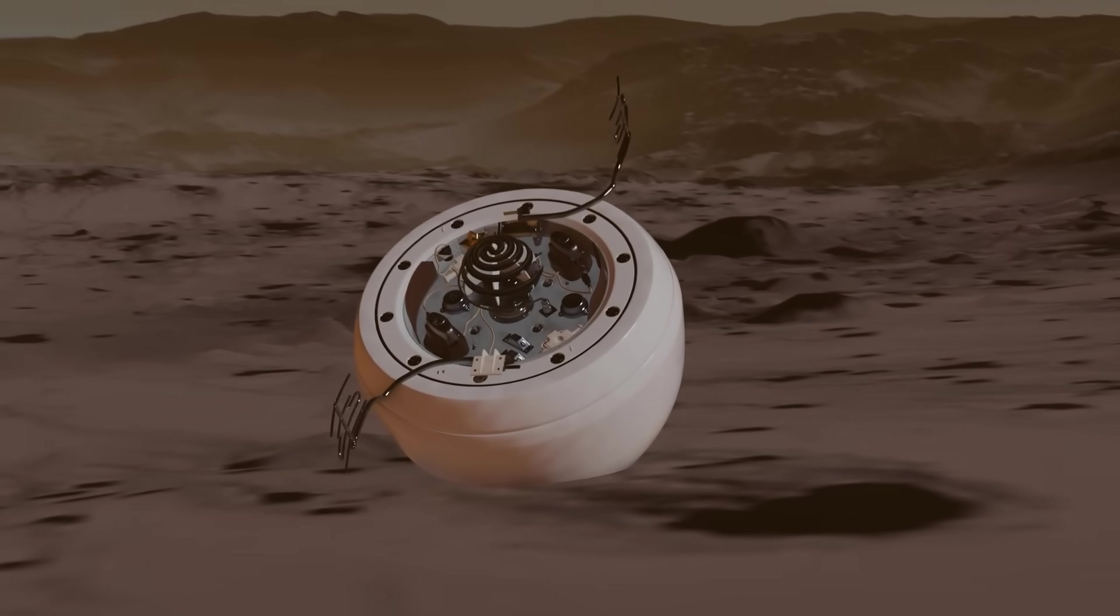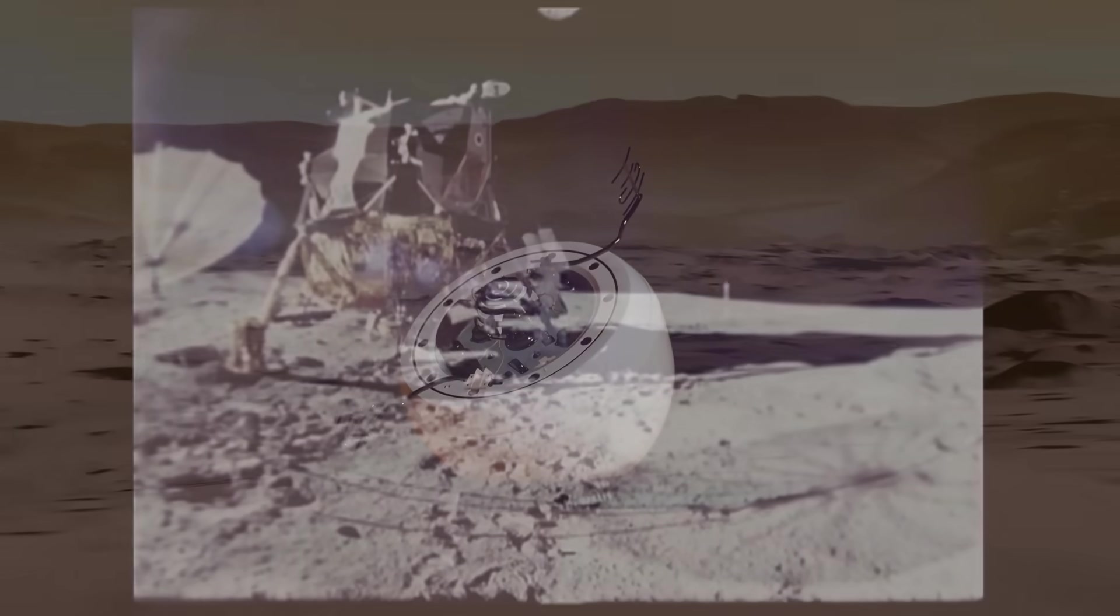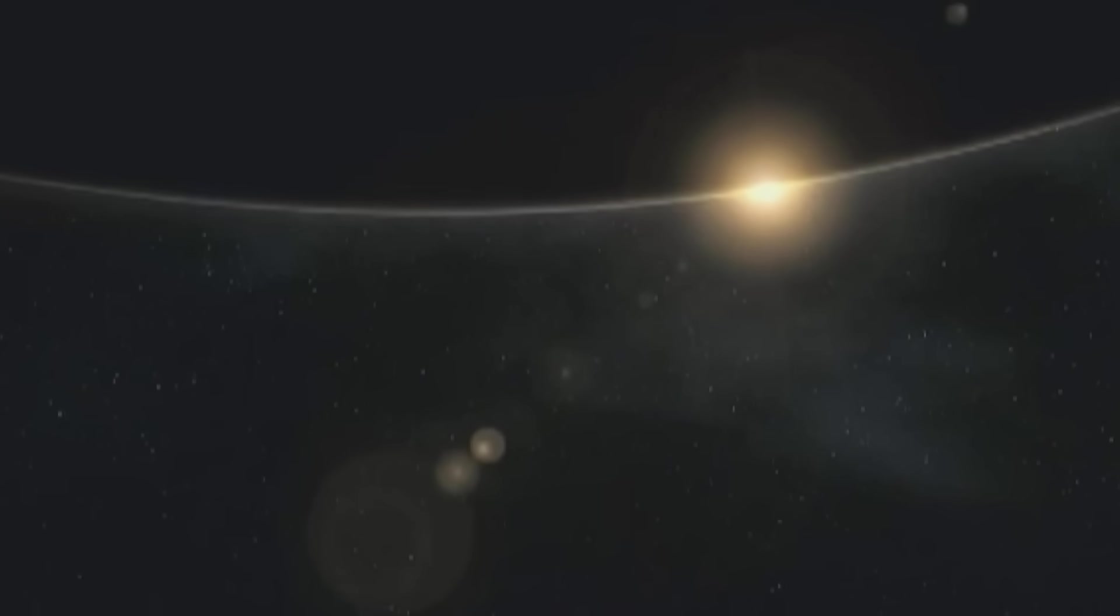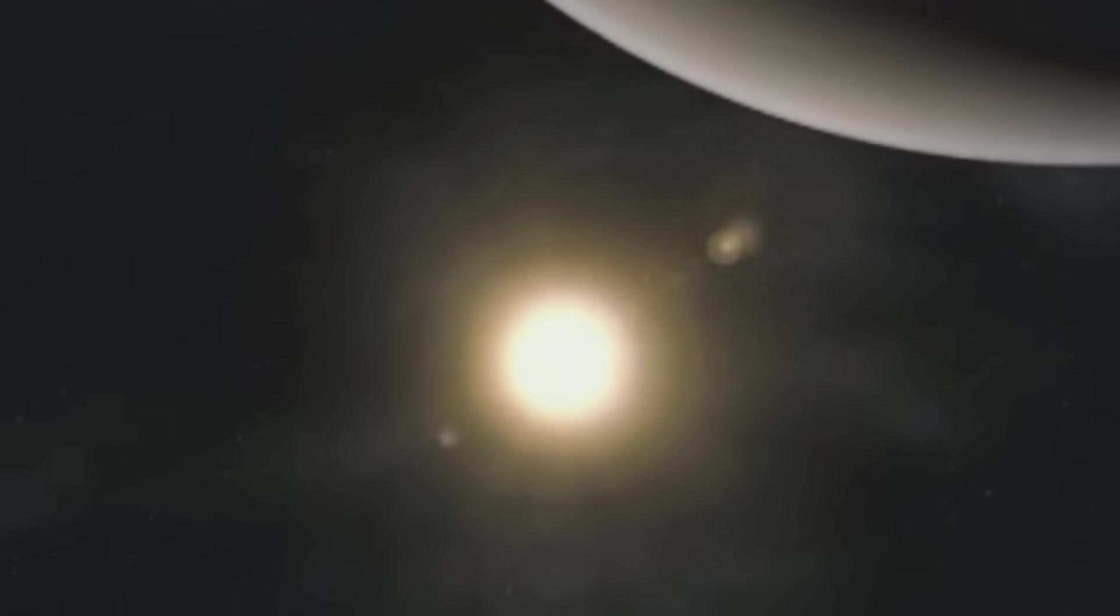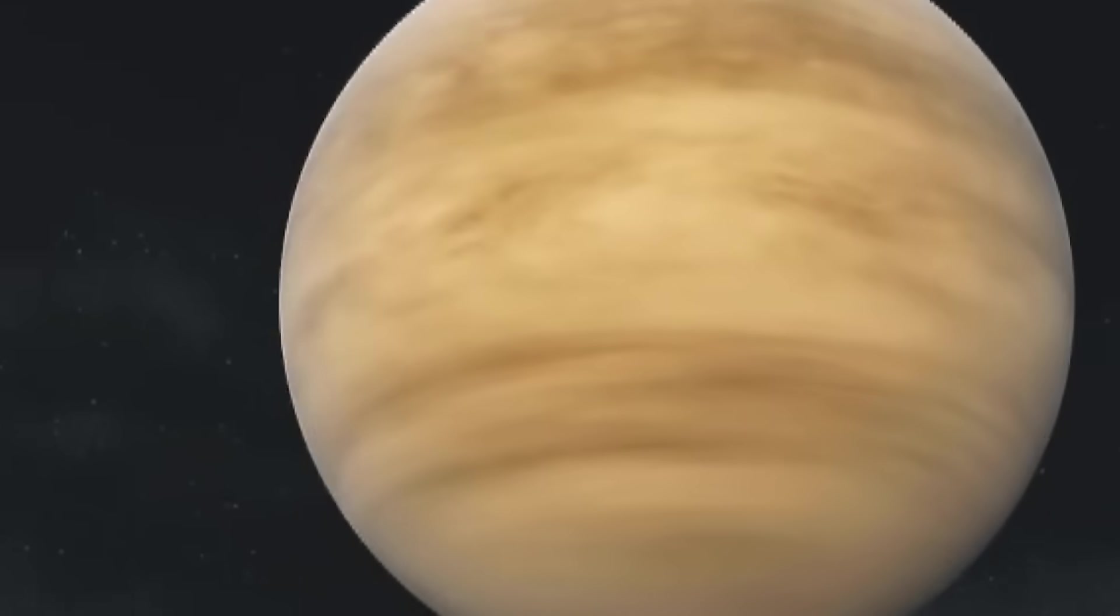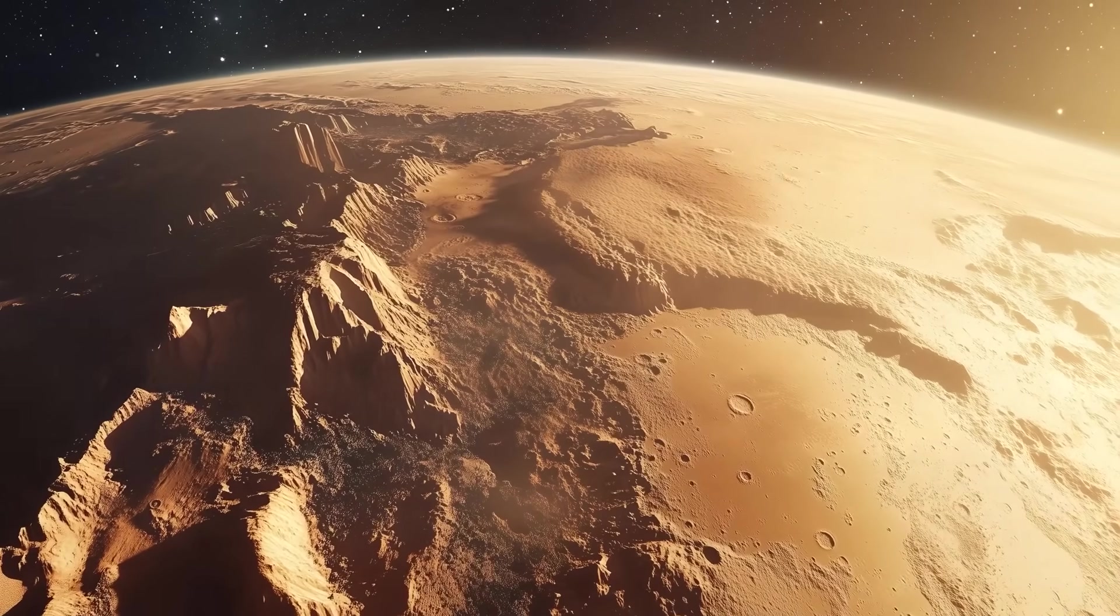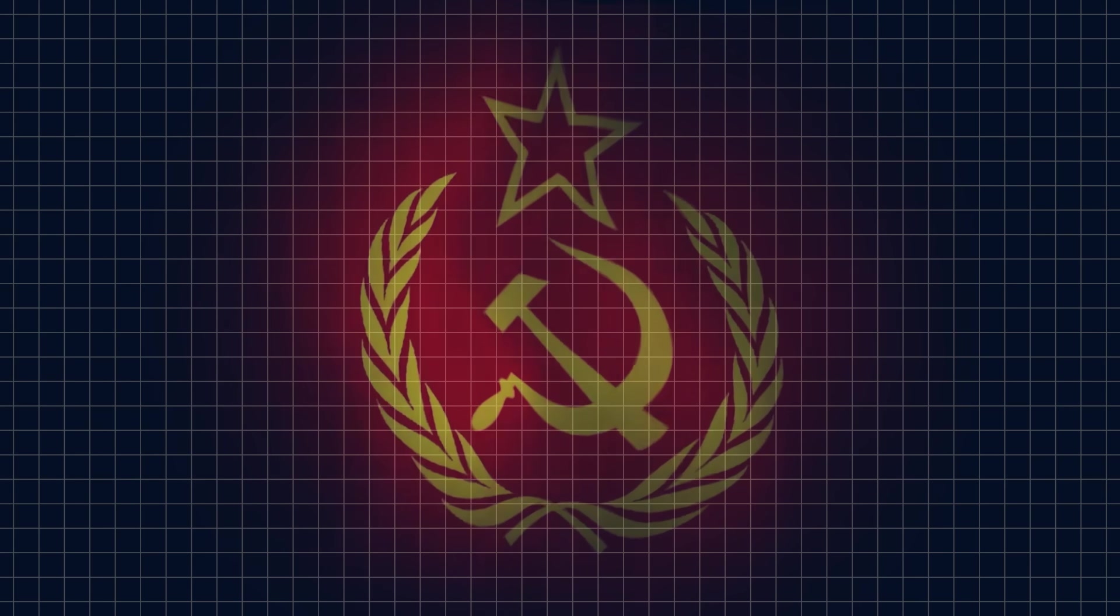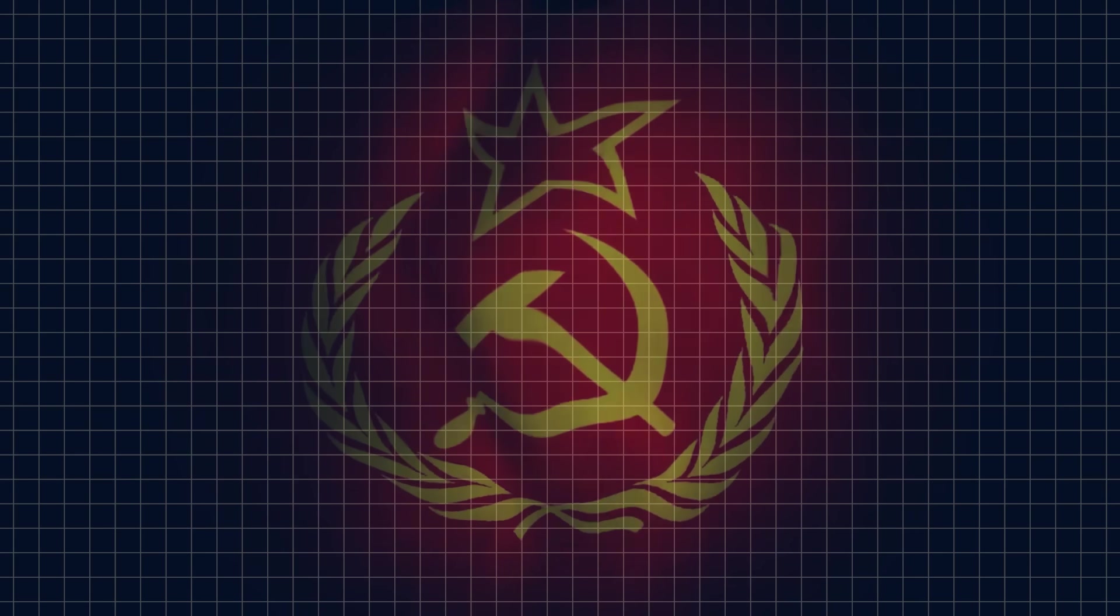And yet the Soviets were undeterred. At this point, what did they have to lose? The Americans had already planted their flag on the moon. That race was won. But the Soviets were still left with other opportunities to make their mark on history. They could be the first to make game-changing discoveries on Venus about the origins of life and the universe. They could even be the first to land on Mars.